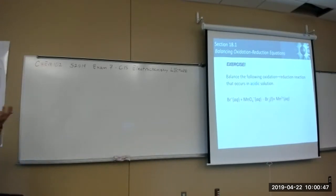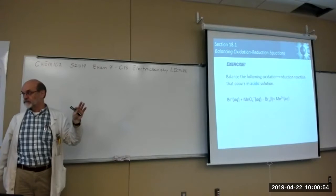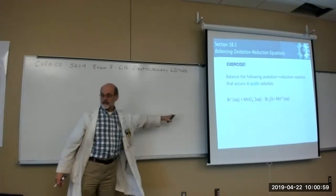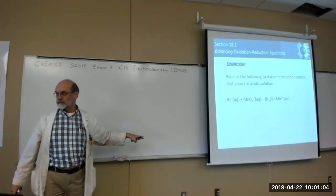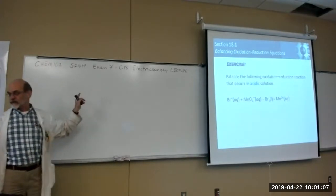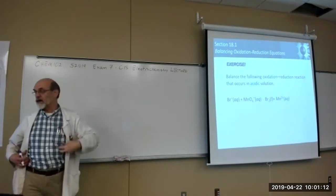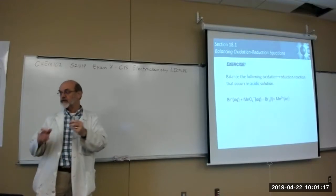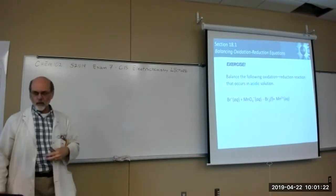When you balance equations like that, later on we'll need to know how many electrons were transferred. In this case it was 6 electrons — when they cancel in the final reaction, don't forget that 6 electrons were transferred. In future calculations, particularly when talking about galvanic cells or batteries, you need to know the number of electrons transferred.